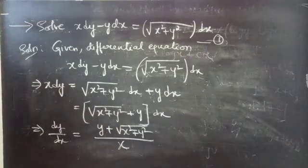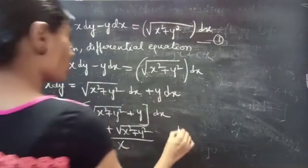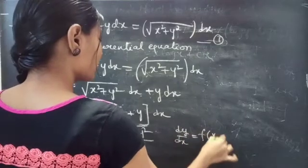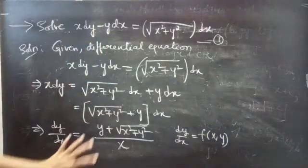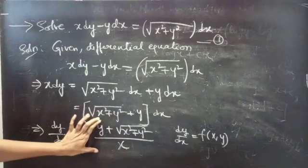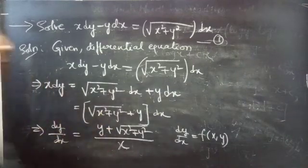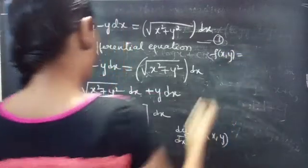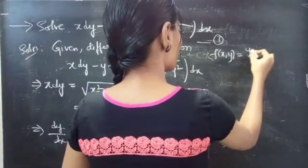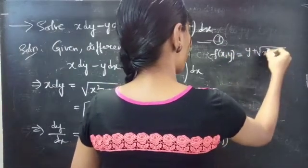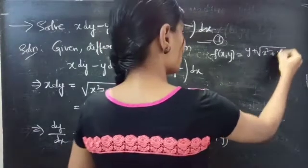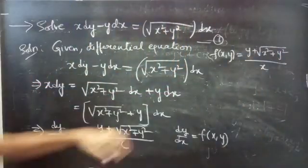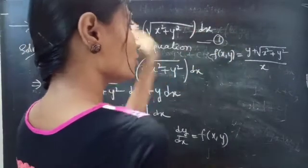This is of the form dy/dx equals to some function of x and y. Let's consider the RHS as f(x, y). So f(x, y) equals to y plus square root of x square plus y square, divided by x. Here, we are going to check whether the function is homogeneous or not.